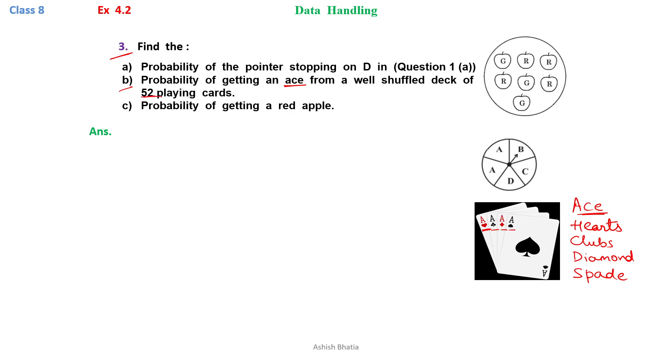The total number of cards in a deck of playing cards is 52. So first, we write down: total number of cards equals 52, which is the total number of outcomes.